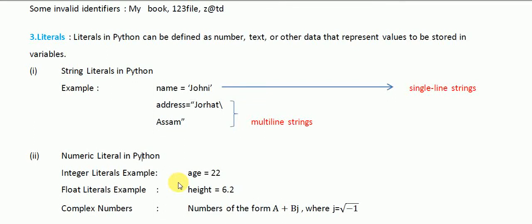Next is float. Float means numbers which have a decimal point. For example, if you declare 'a = 6', you can also write it as '6.0', and then it will be a floating point number.